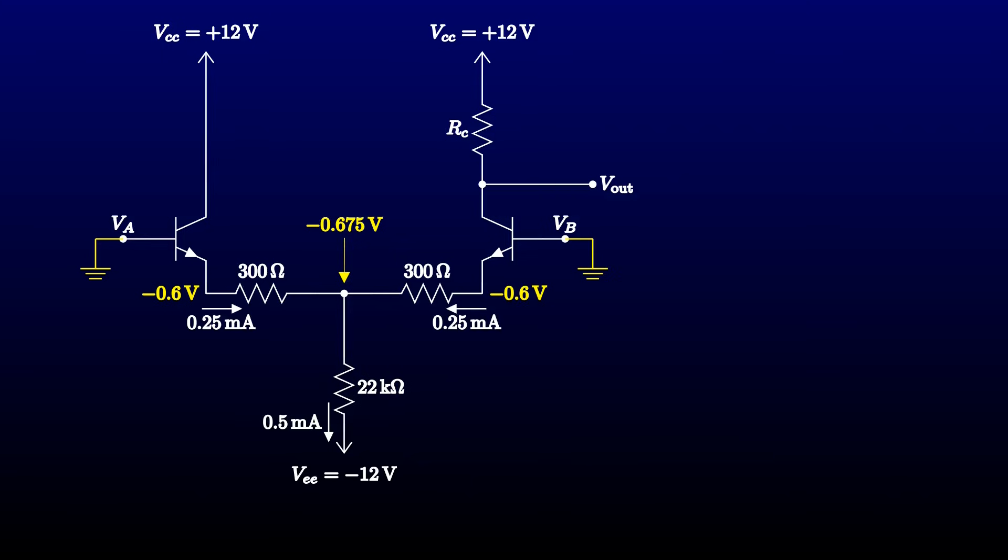Now we have to choose the quiescent voltage at the output. We want to center it roughly in the range that the output voltage can take. In this configuration, the output can't fall below ground, so we choose half the positive supply voltage as the quiescent point. The collector resistor will have to drop those 6 volts while carrying the quarter milliamp quiescent current, so 24k is the value we'll put in.